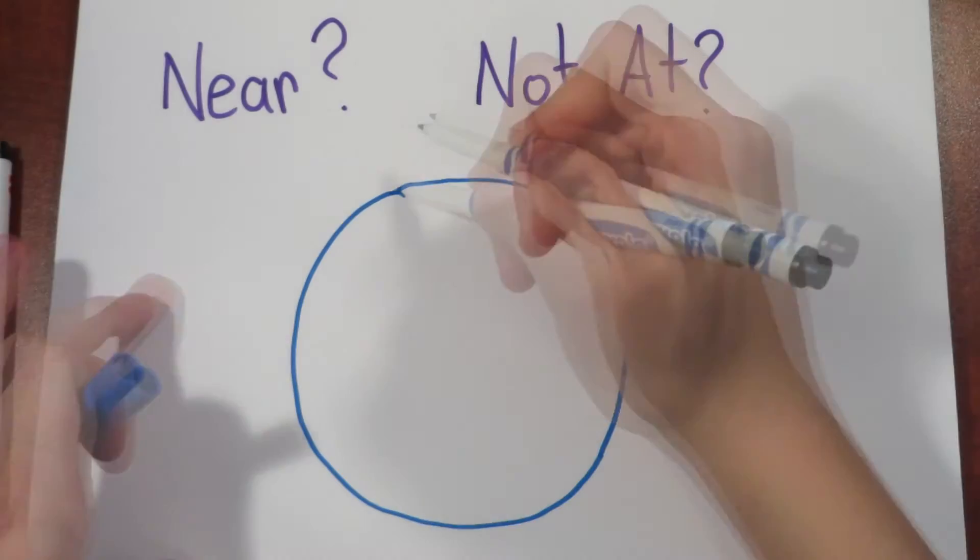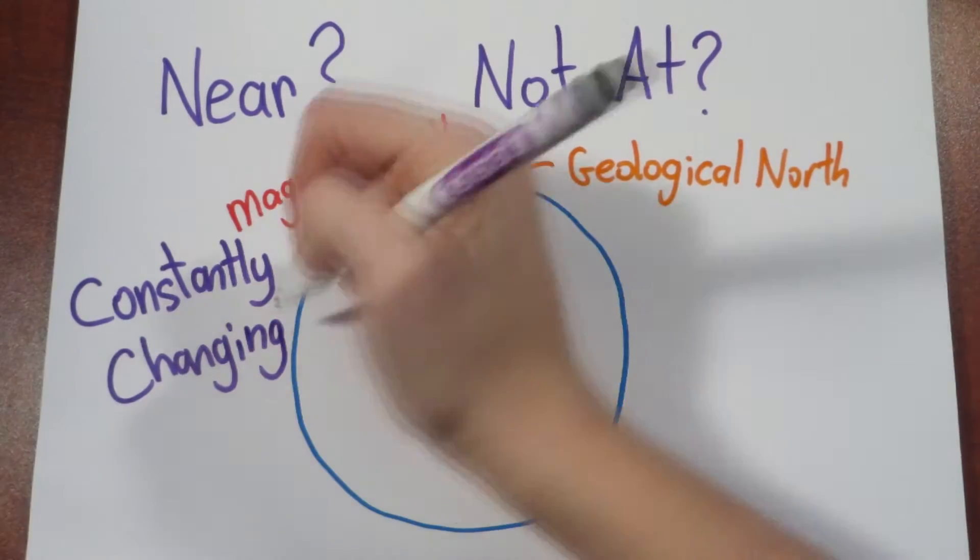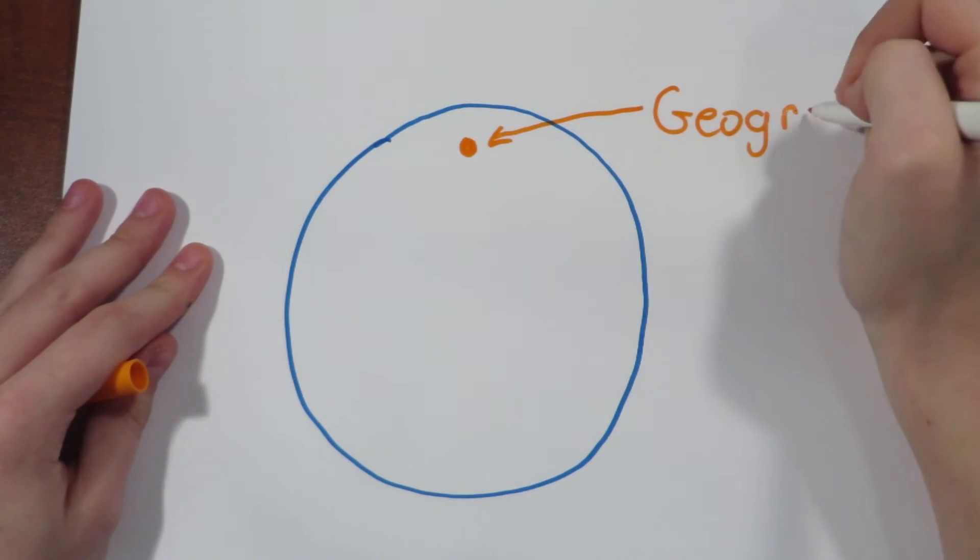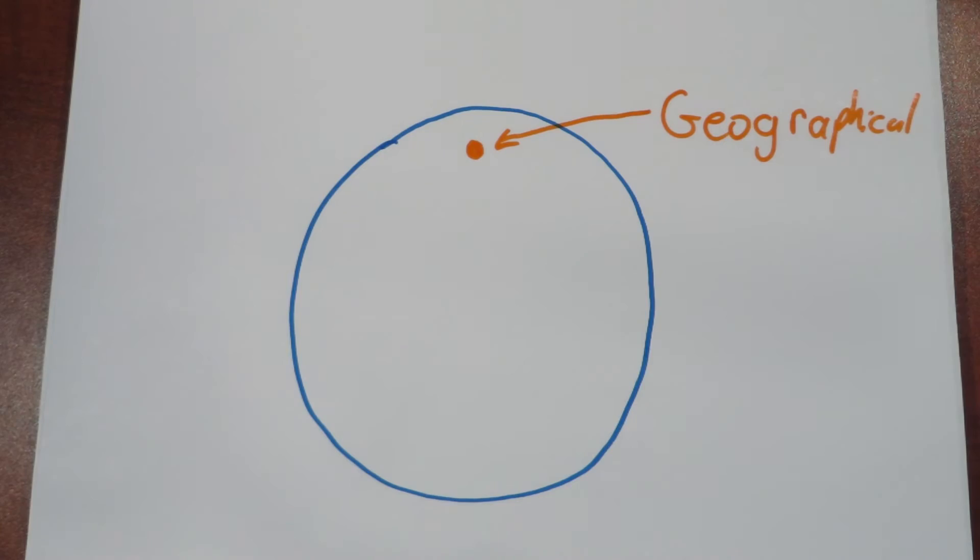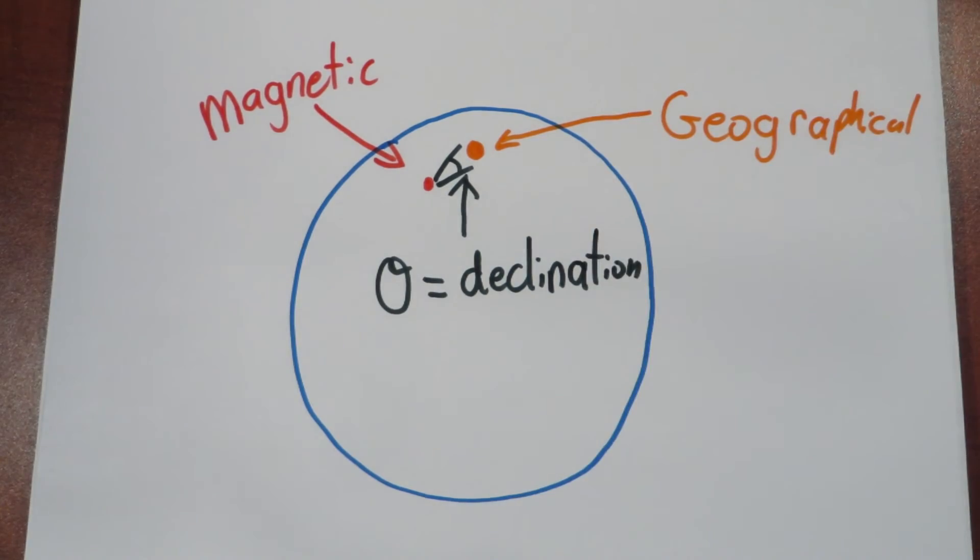If you're wondering why I said near the geological north instead of at the geological north, it's because the magnetic north is constantly changing. The difference between the geographical north and what our compass tells us is north is measured by an angle, and this is called the declination, which is due to the local disturbances or even the altitude at which you're using the compass.